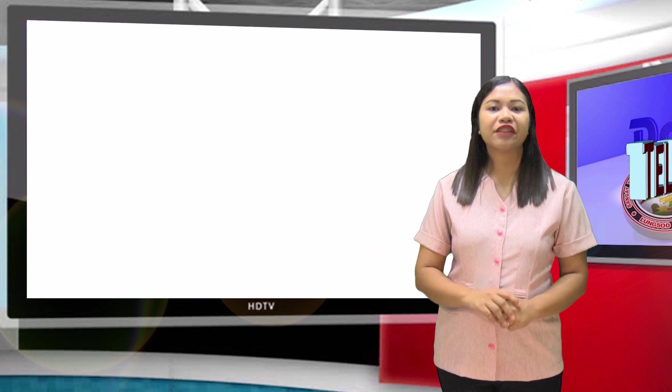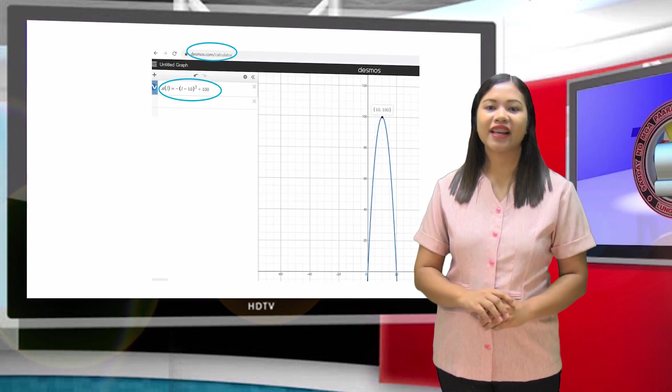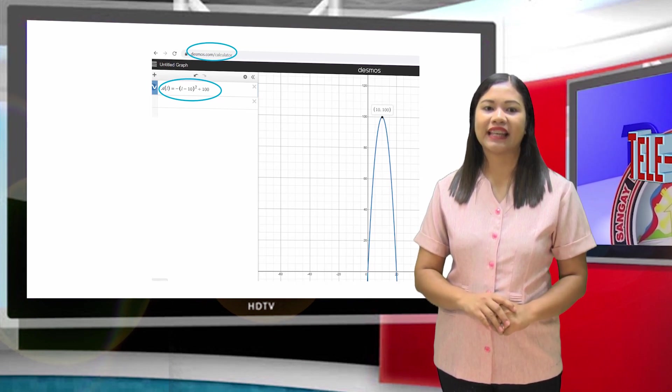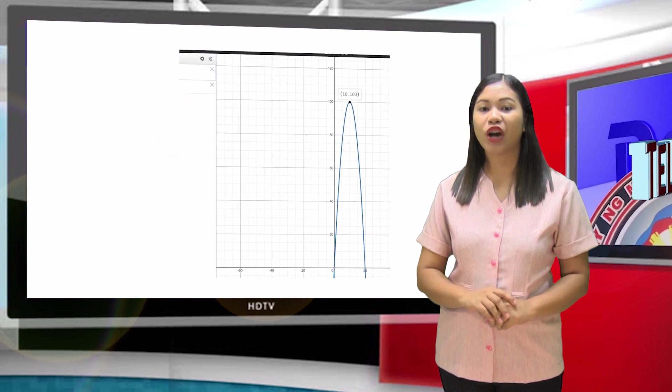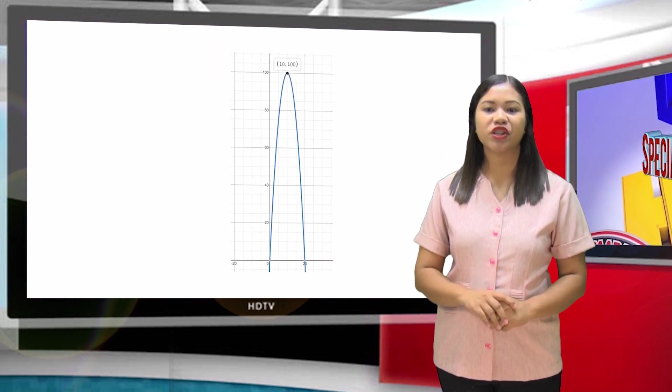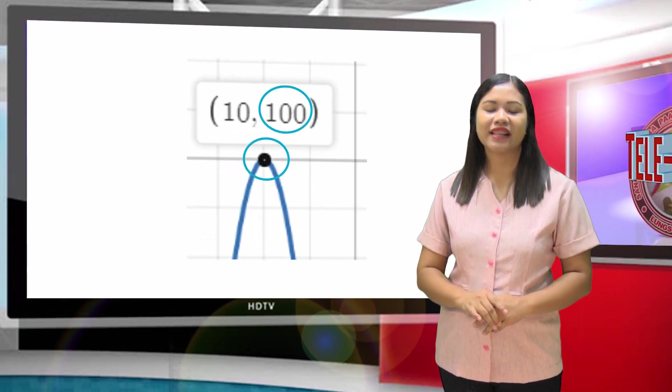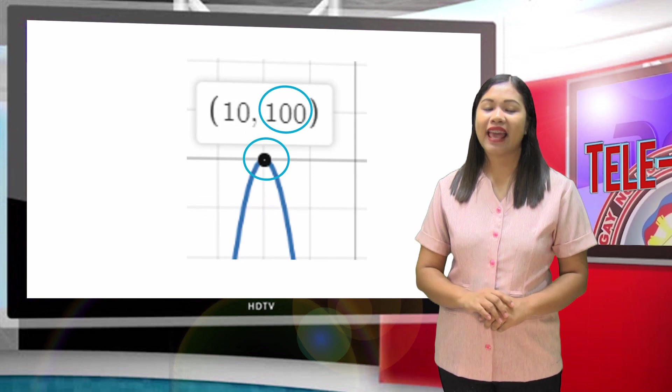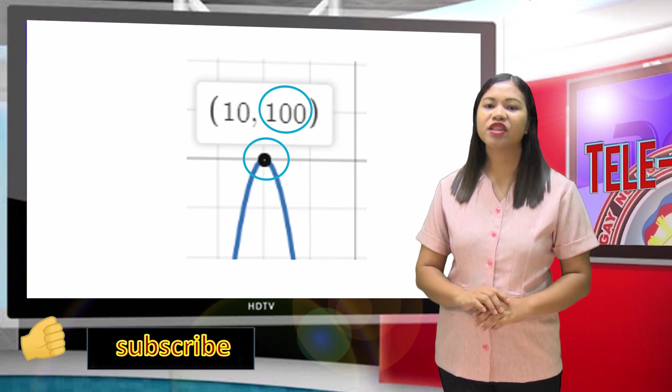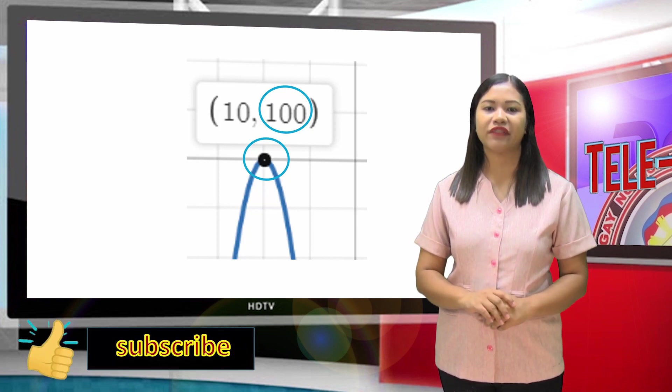To precisely graph the function, we can use graphing software such as GeoGebra or Desmos graphing calculator. This software works fine in computers, laptops, or Android phones. Simply encode the function and the graph will be shown. As you can see on the graph, its maximum point is located at (10, 100). Therefore, the maximum area of a rectangle with a perimeter of 40 feet is 100 square feet.